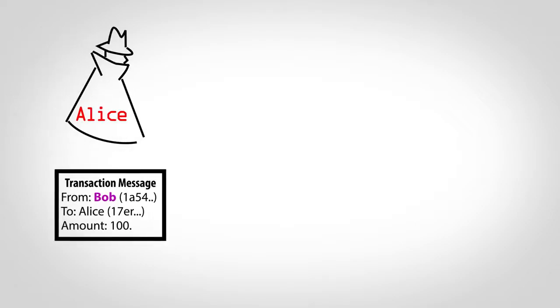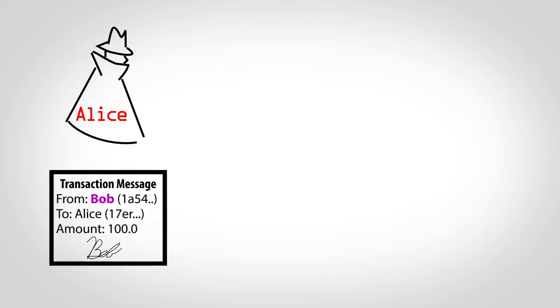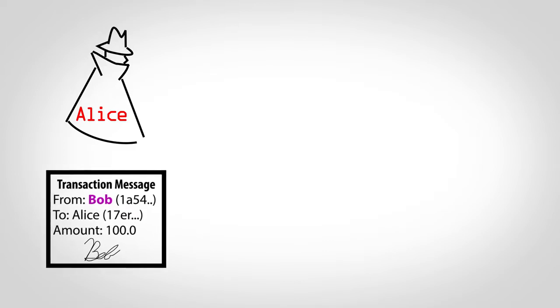If sending money is as simple as creating a message with some account numbers, what's to stop a thief, Alice, from spending Bob's money by using his account number? Like a pen and paper check, Bitcoin requires a kind of signature to prove that the sender is the real owner of an account, but is based on math rather than handwriting.